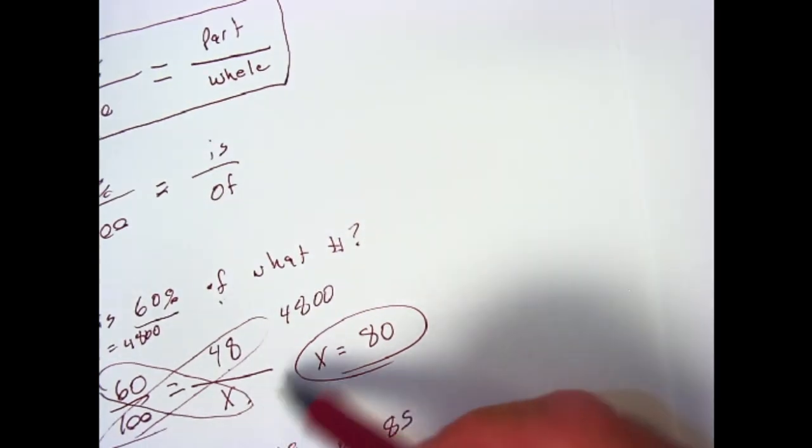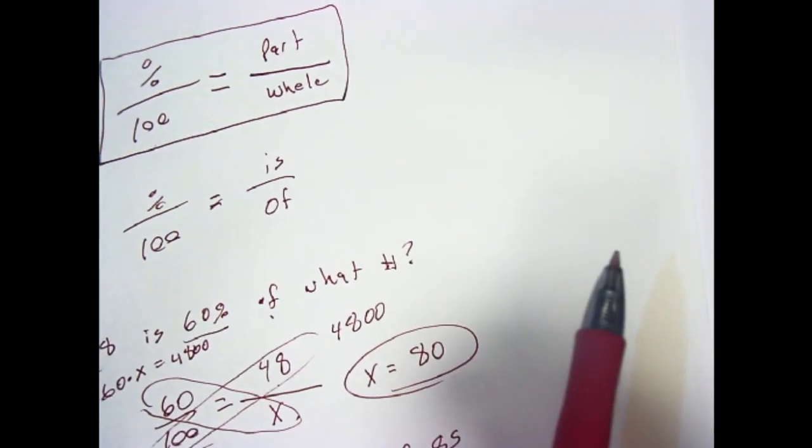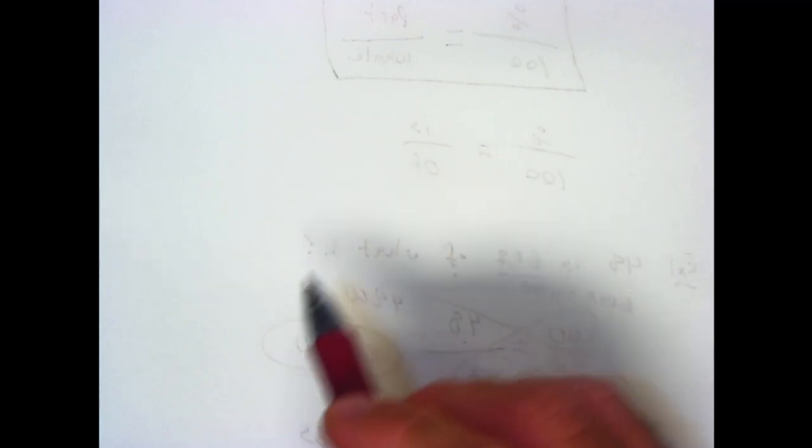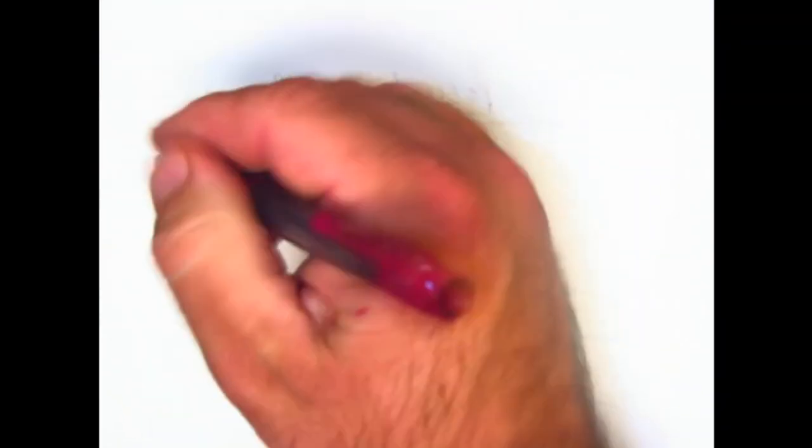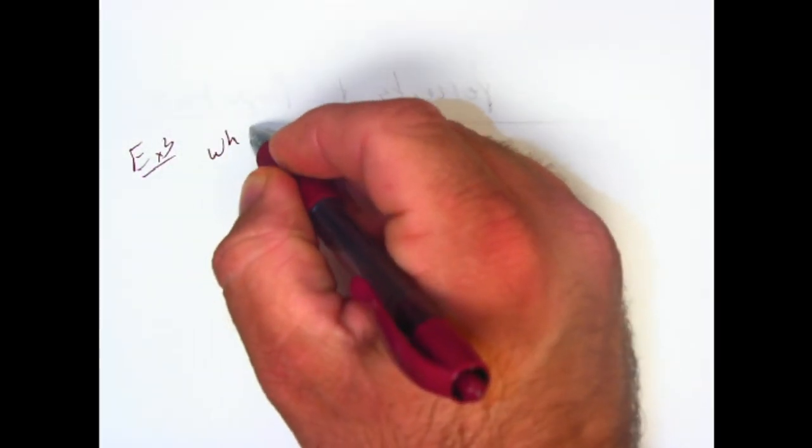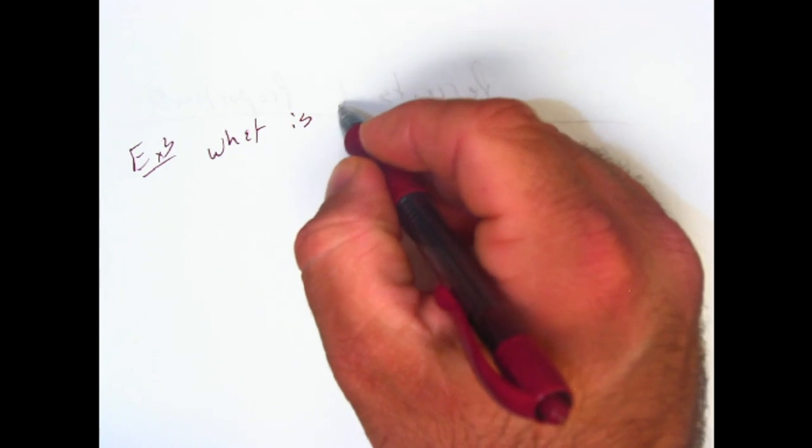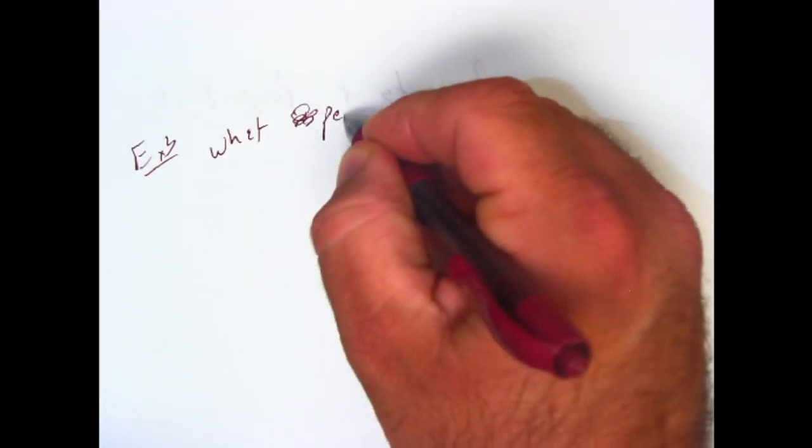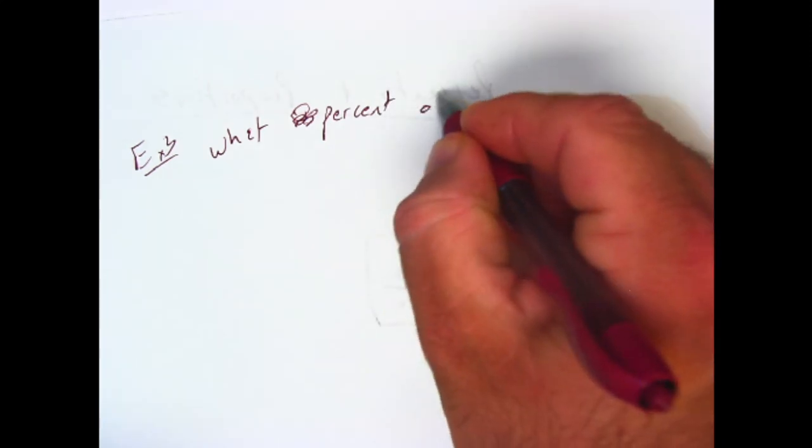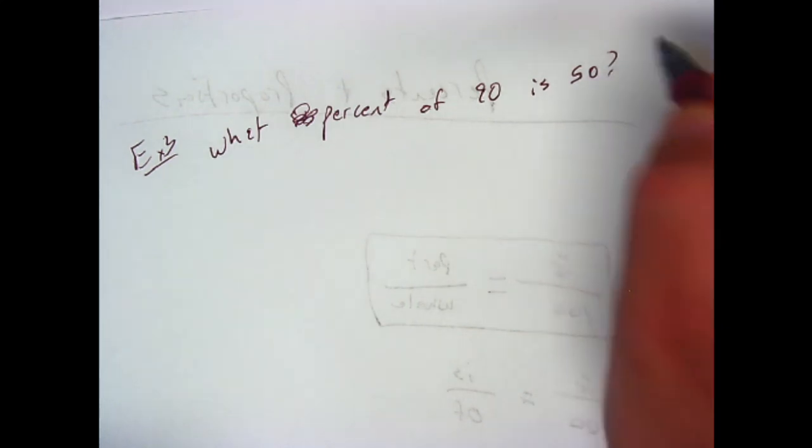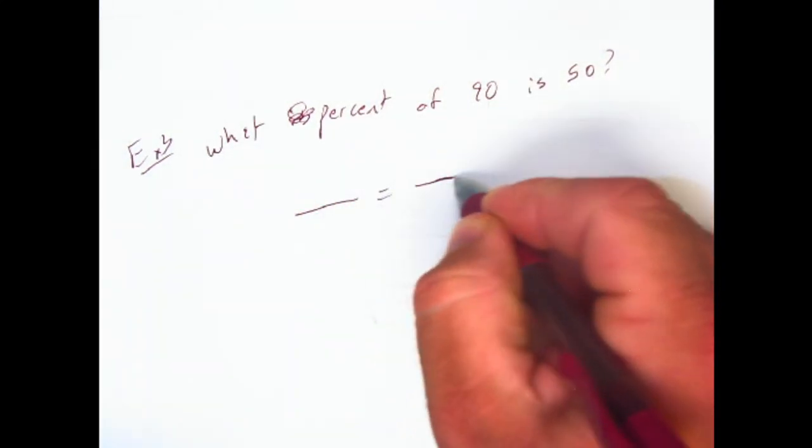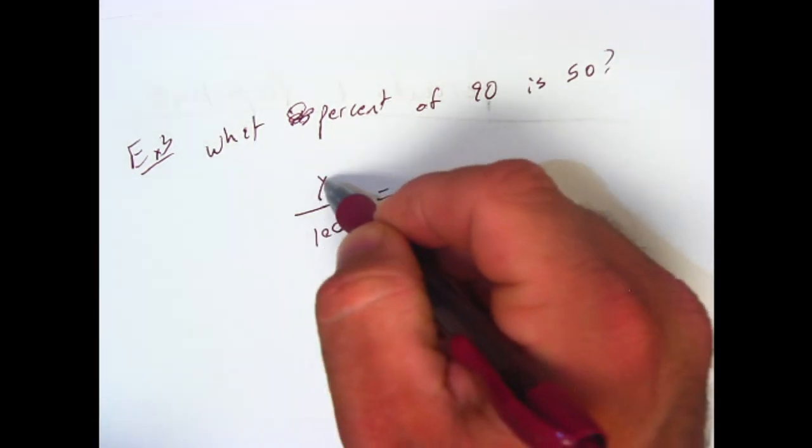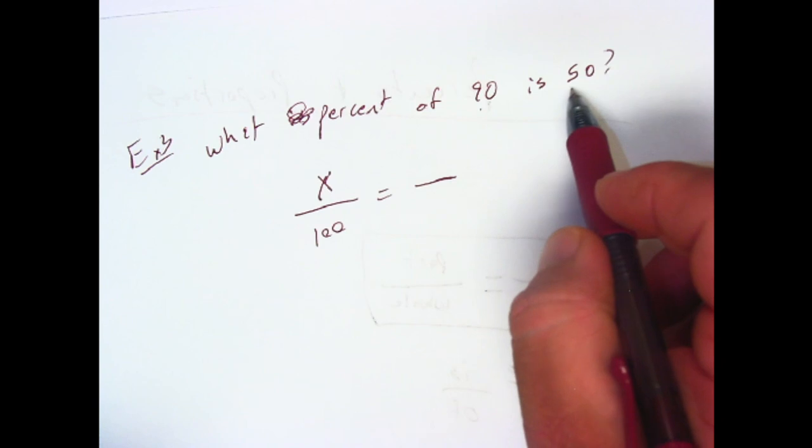Let's do one more. We've done one where we found the whole, we've done one where we found the part. Now let's find the percent. What percent of 90 is 50? So it says what percent, so we don't know the percent this time. We just got to figure out is 90 the whole, or is 50 the whole?